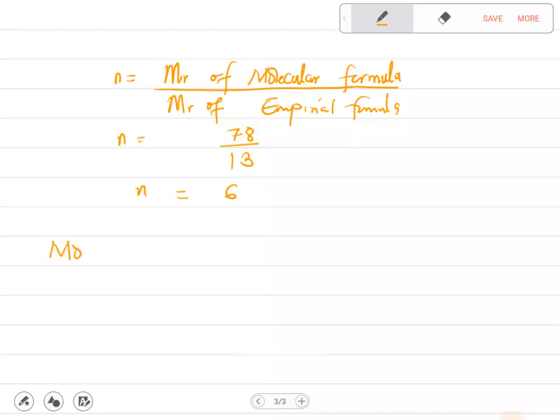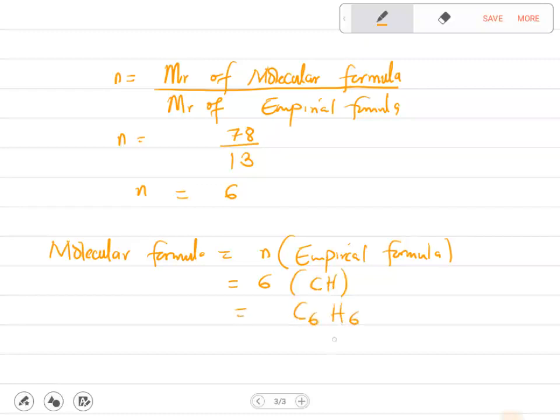Therefore, we say molecular formula is equal to n multiplied by the empirical formula. Now our n is 6, our empirical formula is CH. This gives us C6H6, and we are done.